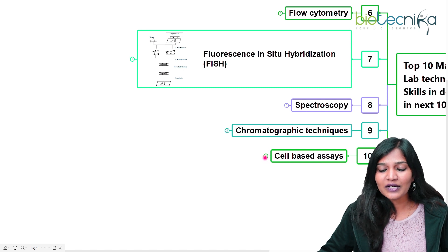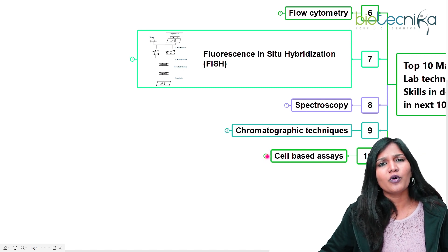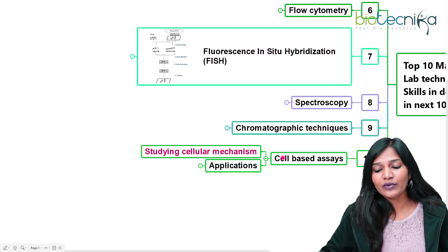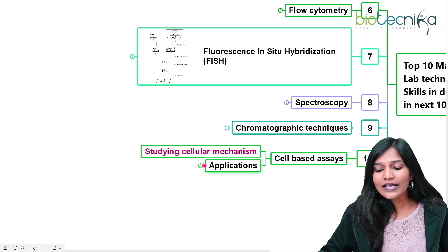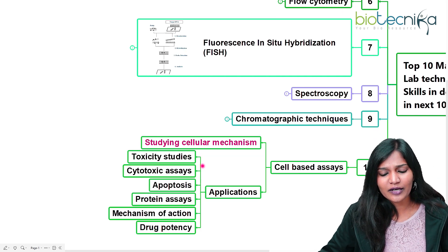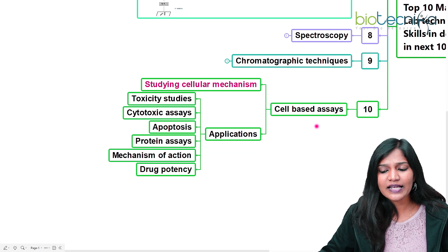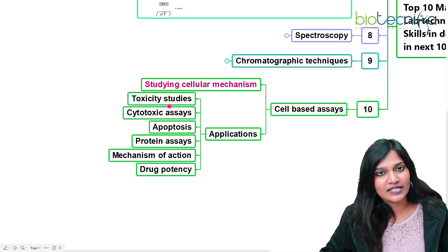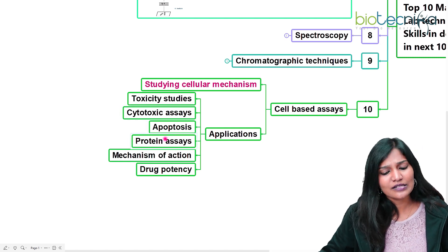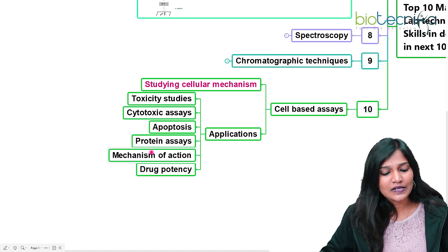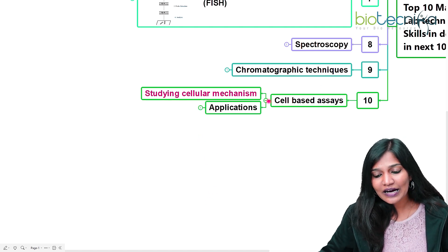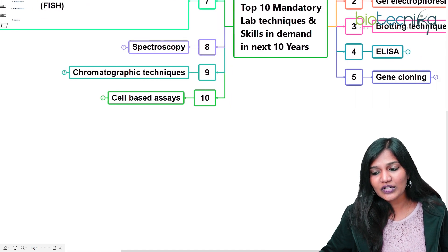The last important technique is cell-based assays. If you want to go into oncology or cell-based research, you need to know certain techniques. During cell-based assays, we study how cellular mechanisms work. Applications include toxicity studies, cytotoxic assays, apoptosis, cancer research, protein assays, mechanism of action studies, and determining drug potency.